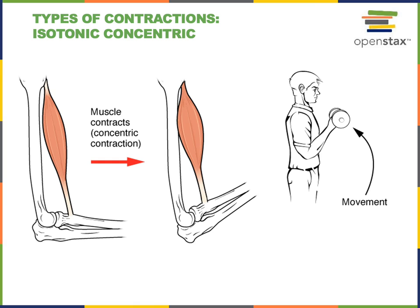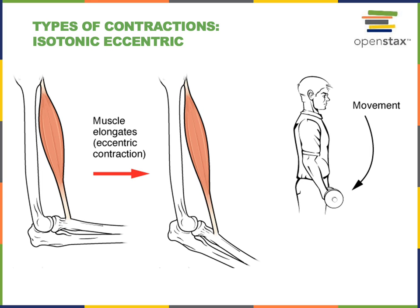The example shown in the illustration is the biceps brachii muscle producing flexion of the elbow joint with the added load of a dumbbell. The muscle produces greater tension than the weight of the load, causing the muscle to shorten as the elbow is flexed.